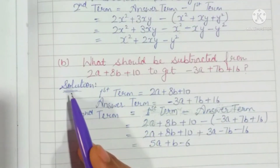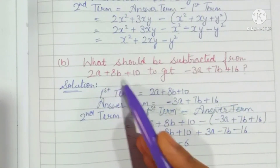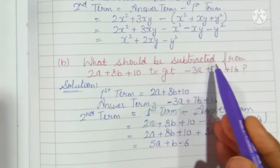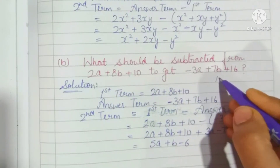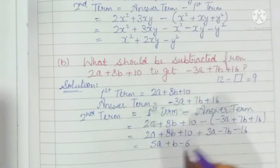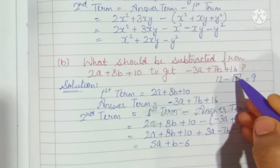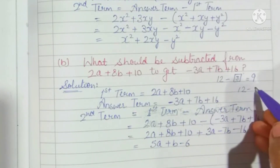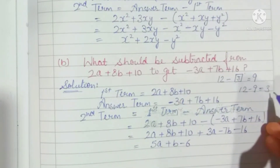Let's see part (b). What should be subtracted from this expression to get minus 3a plus 7b plus 16? We have to find what should be subtracted. For example, what should we subtract from 12 to get 9? The answer will be 3. How can we find? From 12, we will subtract 9 and we get the answer 3.